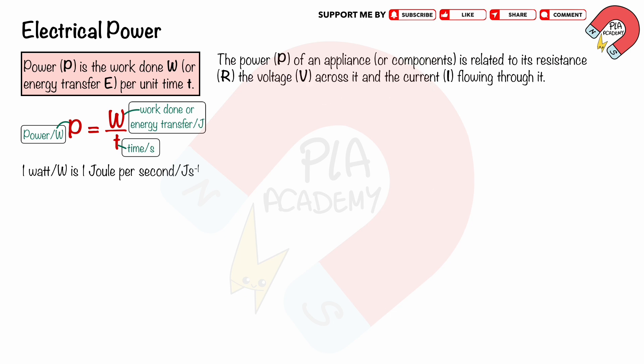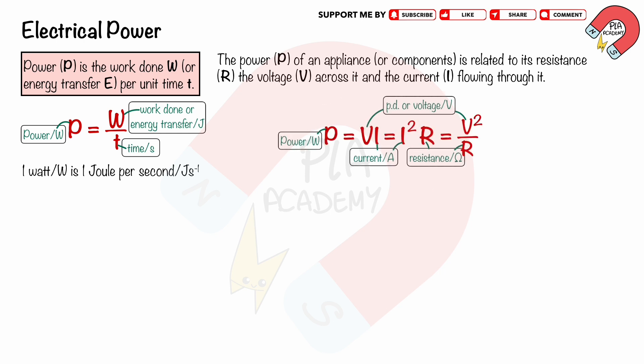The electrical power P of an appliance or component is related to its resistance R, the voltage V across it, and the current I flowing through it. We can write the equations as P equals VI, or P equals I squared R, or P equals V squared over R, where V is voltage in volts, I is the current in amperes, and R is the resistance in ohms.